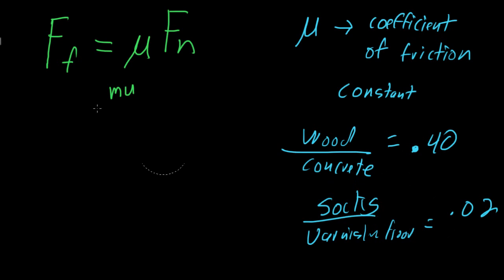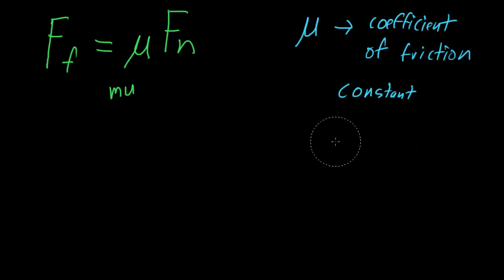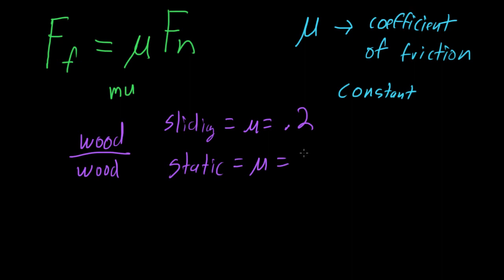Now, there are usually different coefficients of friction for sliding or static. For instance, if we have a wood block sliding over a wooden floor, if it's sliding friction, then mu would equal about .2. However, if it's static friction, then mu would equal about .4. Right? This is always true. Like we talked about static force is always greater than sliding force of friction. The static mu is always going to be greater than the sliding mu.